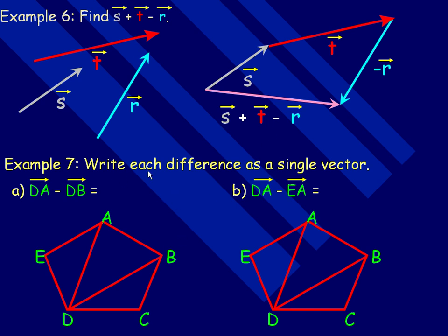In the last example, we're asked to write each difference as a single vector. So DA minus DB. Well, let's draw in DA and DB. There's DA and there's DB. And notice that these two vectors are actually tail to tail. So that alternate method on the previous page is convenient for drawing this vector. Remember, the difference vector goes from the head of the DB vector to the head of the one you're subtracting it from. So this BA vector is the difference of DA and DB. So DA minus DB is equal to BA.